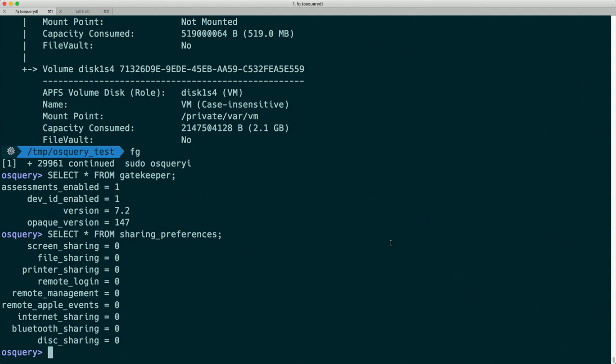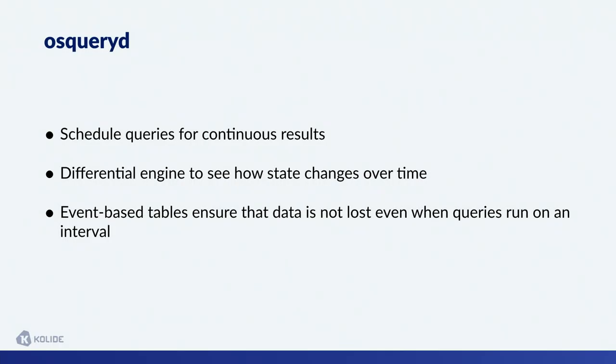I did have 'monitoring' in the title of this talk, so how can we do monitoring with OSQuery? The answer is we have the OSQuery daemon. The daemon allows us to schedule queries for continuous results — we say how often we want the query to run, and it will run the query on that interval and provide output to whatever logging pipeline we're interested in. It can write to the file system, AWS, syslog — lots of different places.